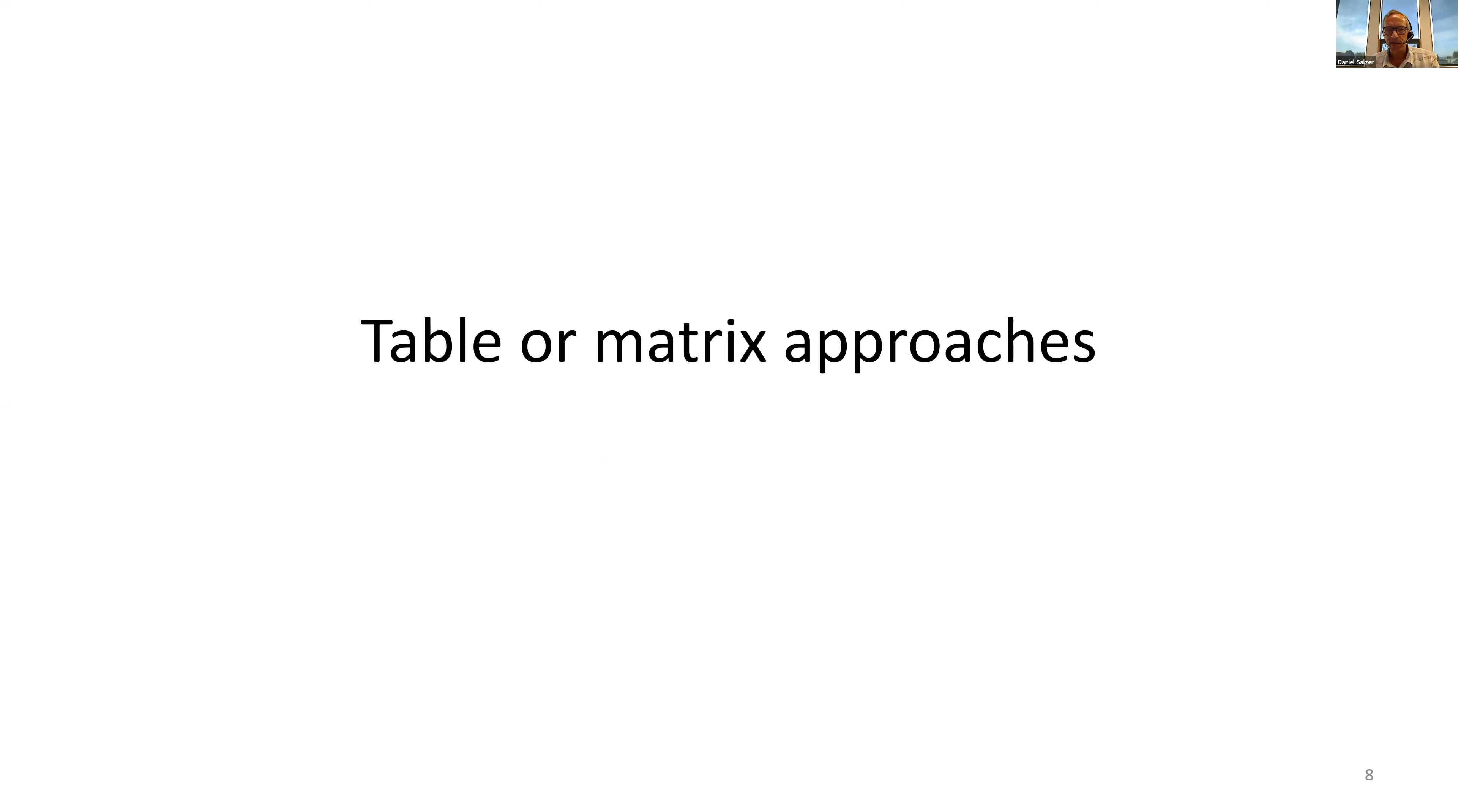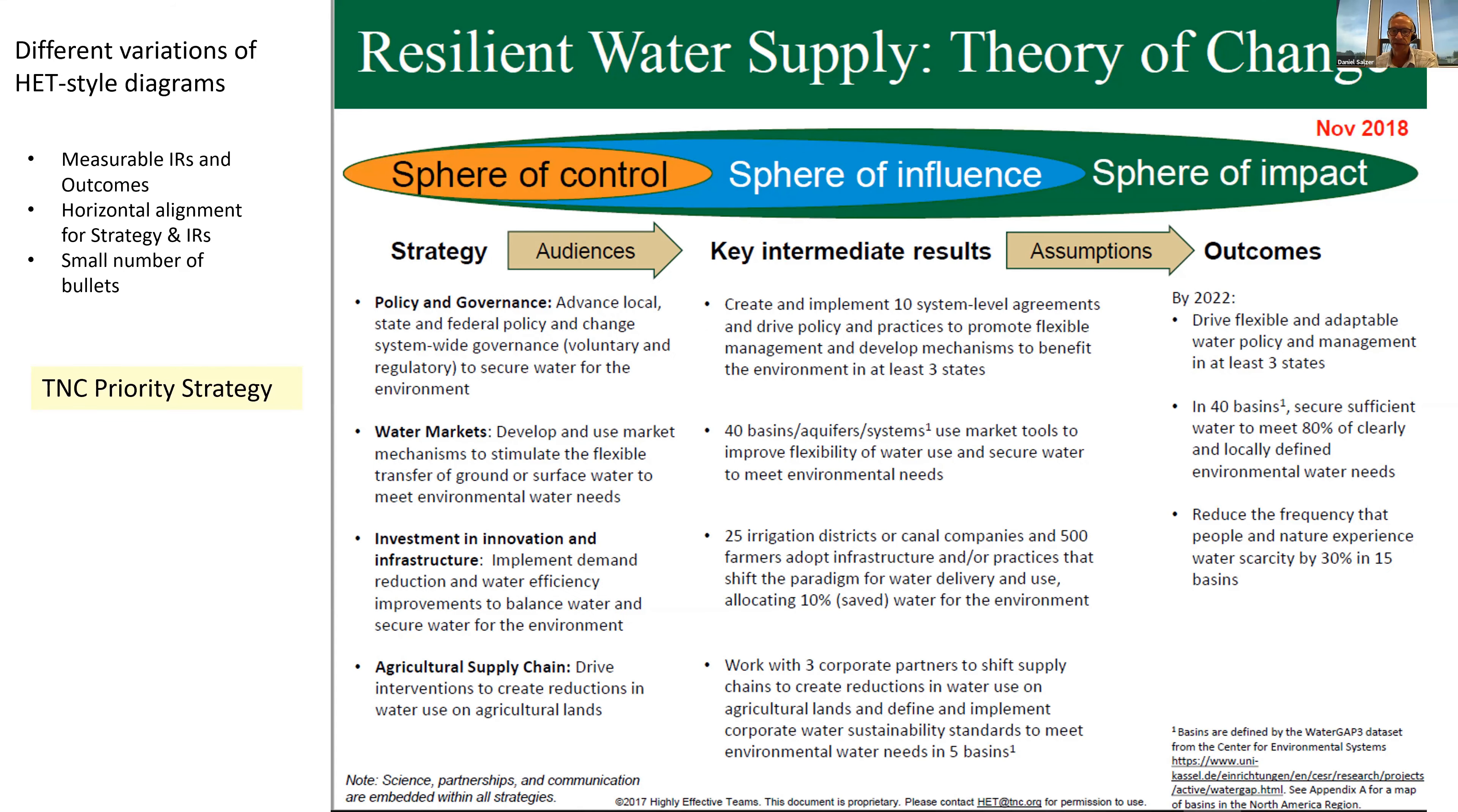In terms of table or matrix approaches, I suspect most of you are familiar with the highly effective teams tools in this diagram that includes different spheres of control, influence, and impact. I'm including it in the table category because the theory of change part is primarily a three column table with bulleted statements.